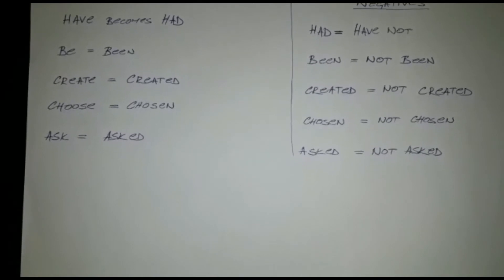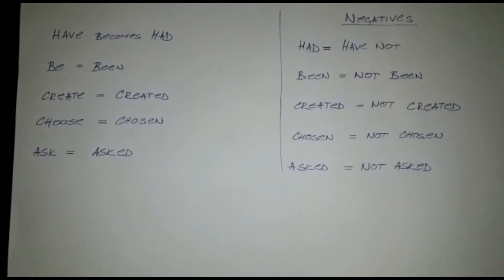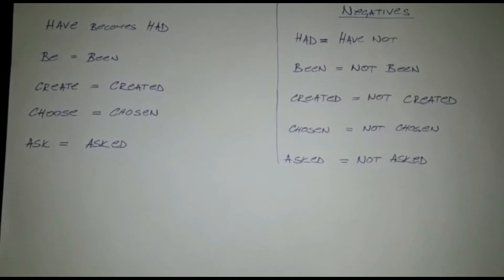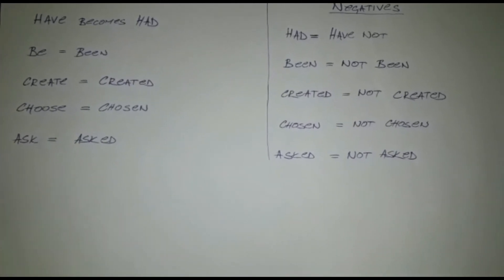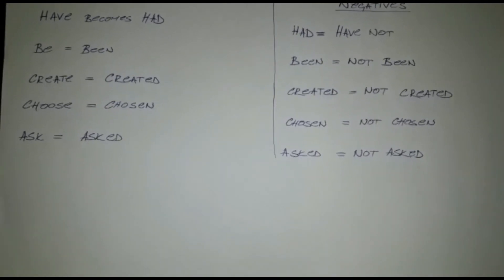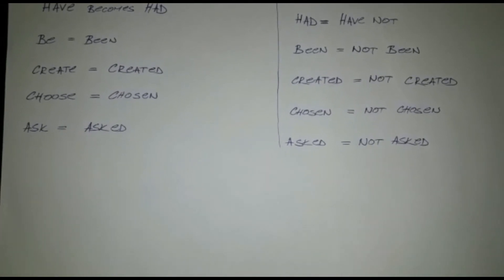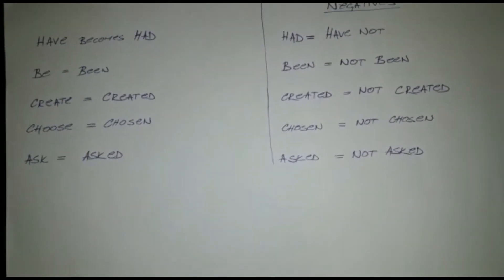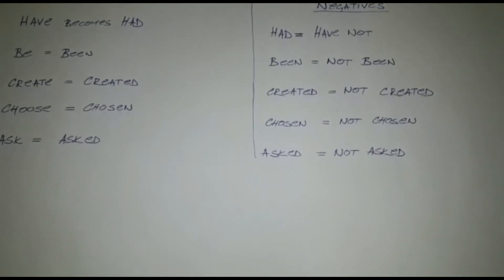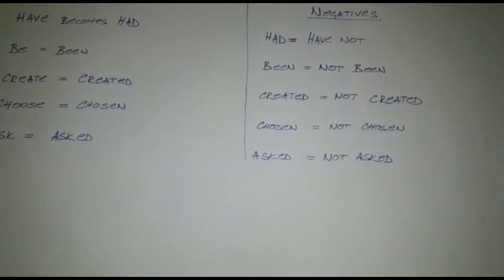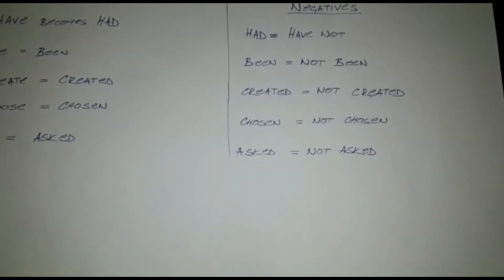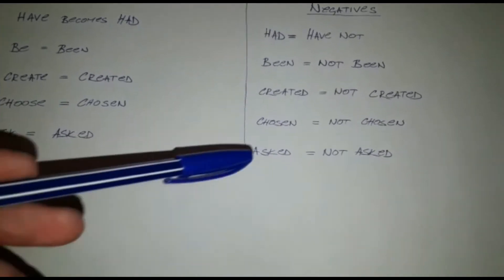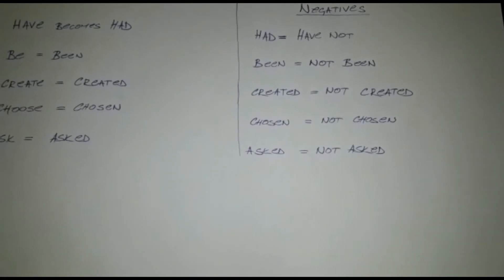We also have negatives. They simply mean the opposite of doing something. So, have not had, have not been, have not created, have not chosen, have not asked. Instead of saying I have had a lot of fun, you will say I have not had a lot of fun. She has been learning a lot becomes she has not been learning a lot. They have created a beautiful project becomes they have not created a beautiful project. You have chosen to watch a video becomes you have not chosen to watch a video.